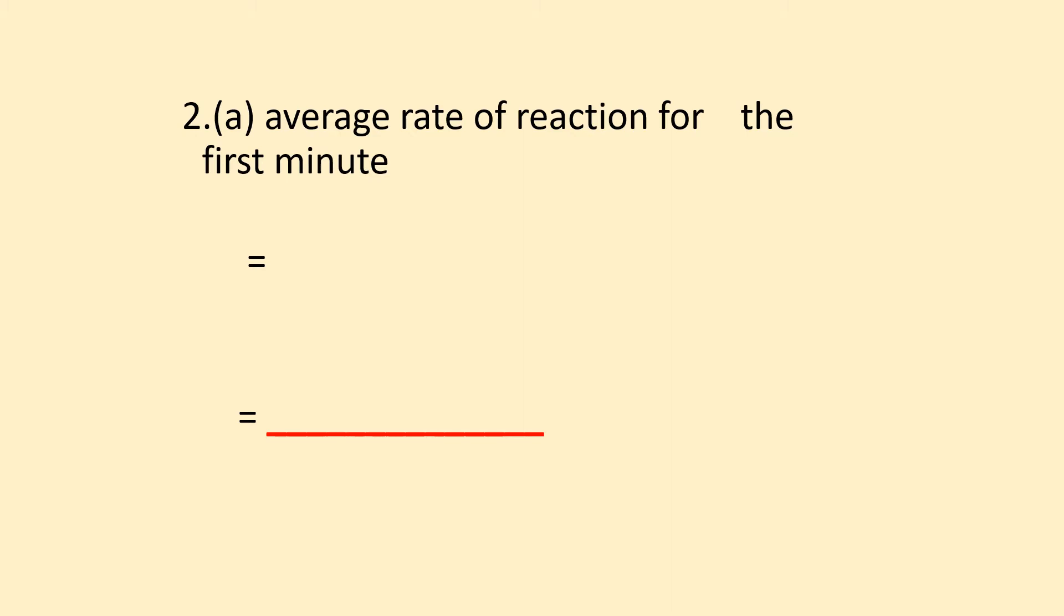For question 2a, calculate the average rate of reaction for the first minute. The first minute means from 0 to 1 minute. At 1 minute, the volume is 22 cm³. So calculate (22-0)/(1-0) = 22 cm³ per minute. Make sure your unit is correct: cm³ per minute.